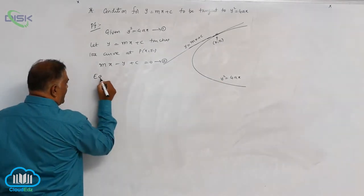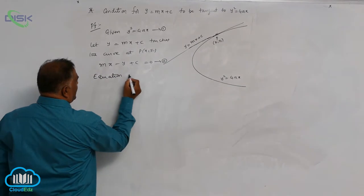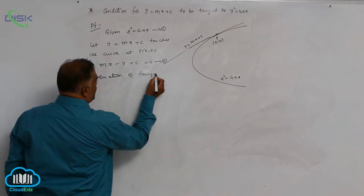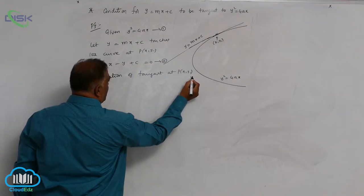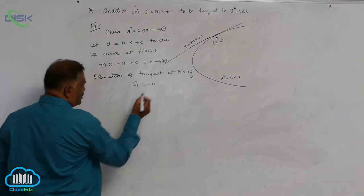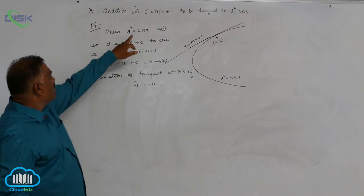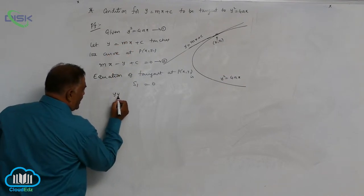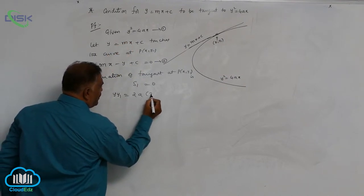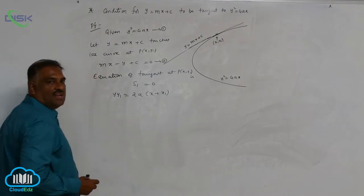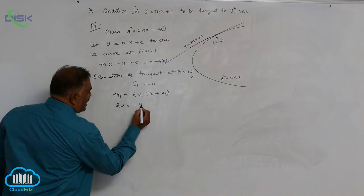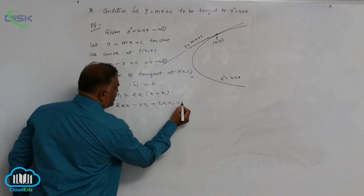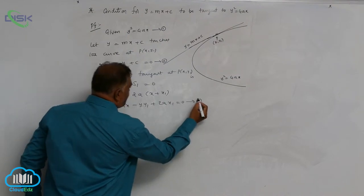Equation of tangent at P(x₁, y₁) in general notation is S₁ = 0. How to write S₁: yy₁ = 2a(x + x₁). Rewrite this equation as 2ax - yy₁ + 2ax₁ = 0, call it equation 3.